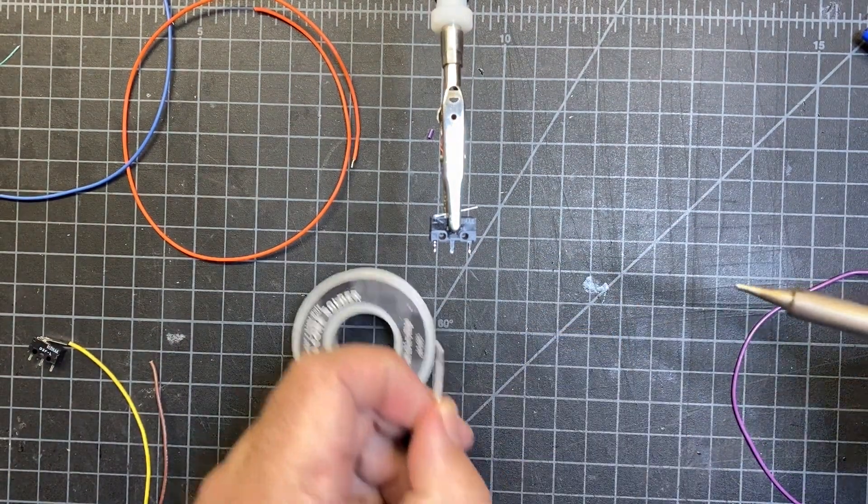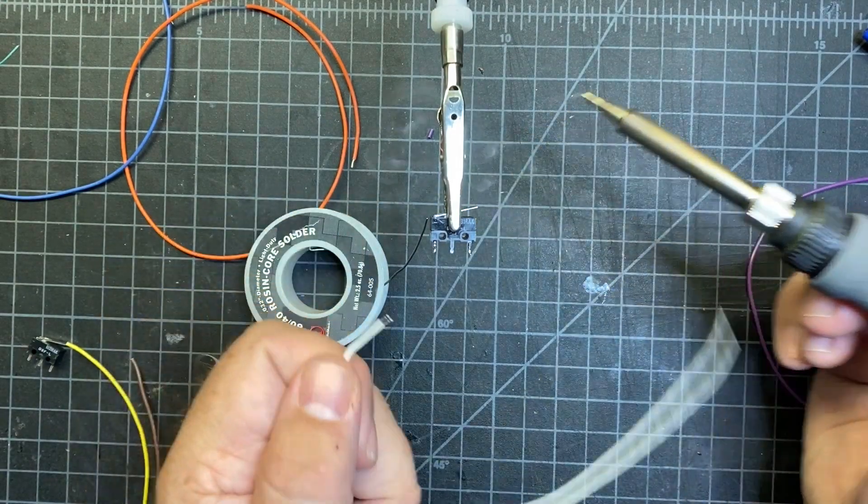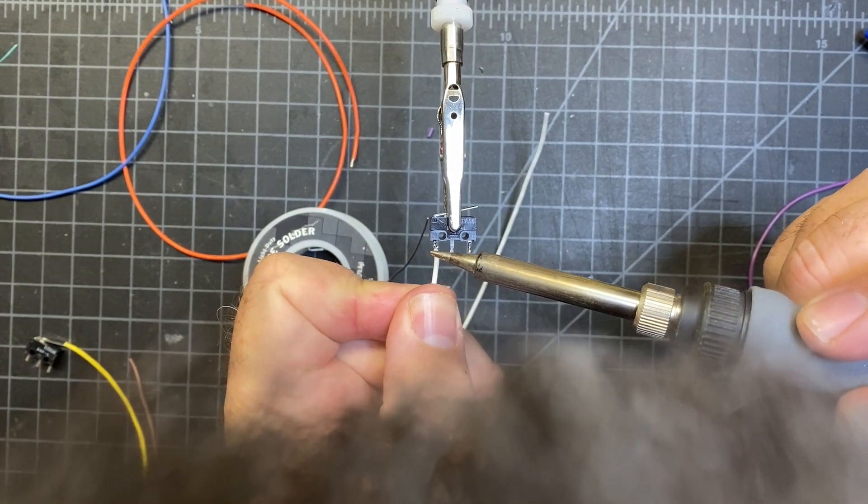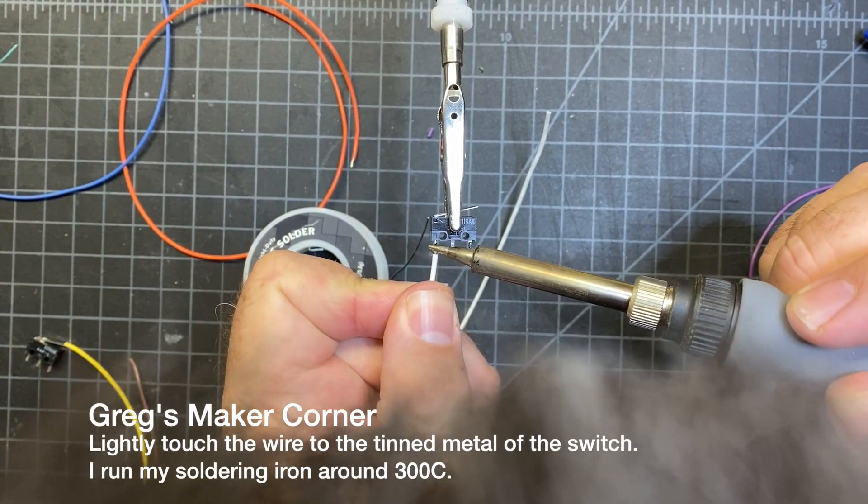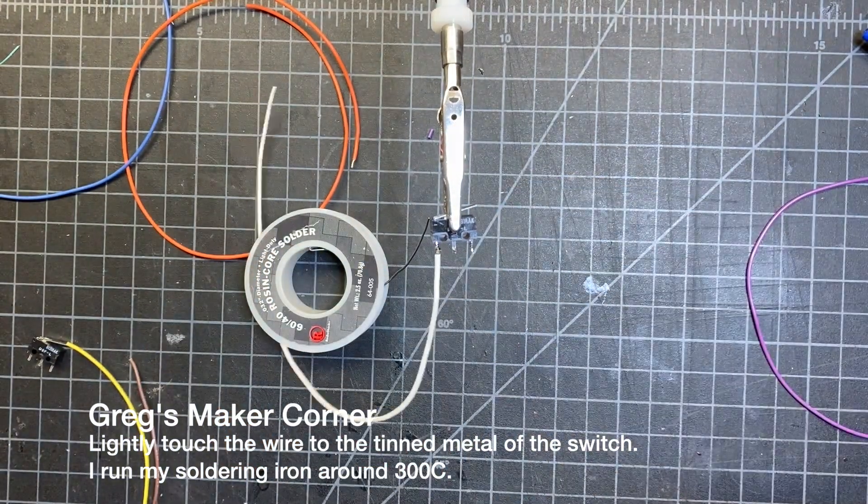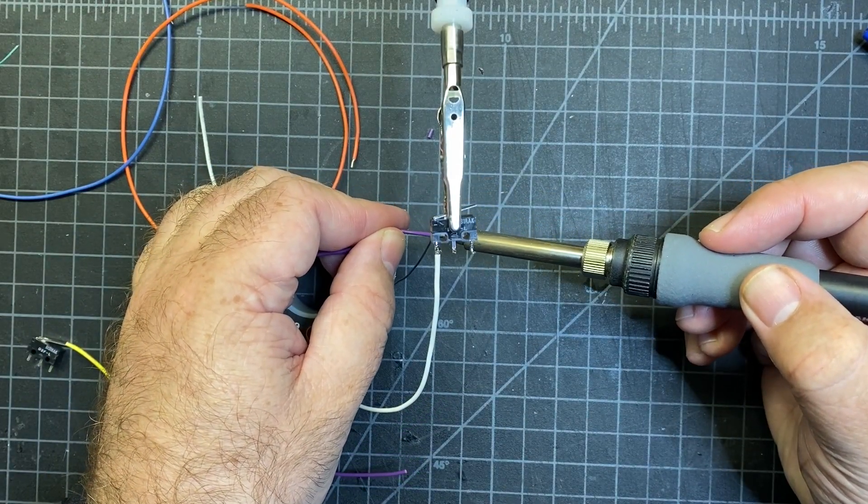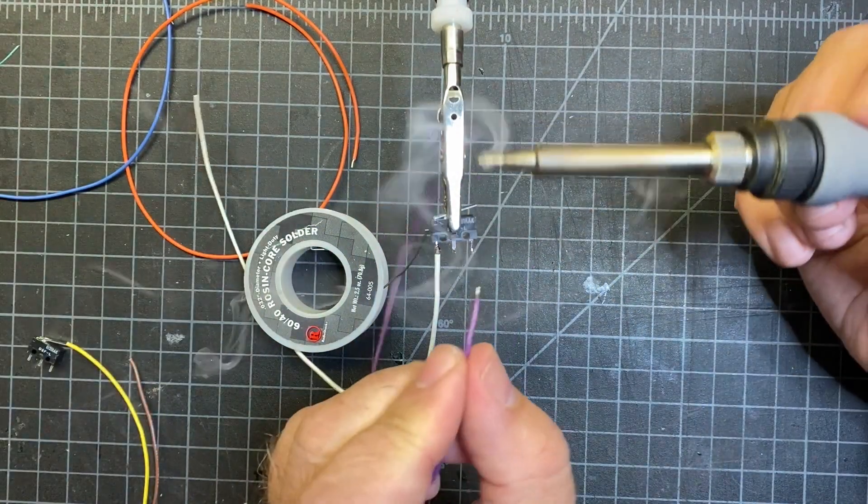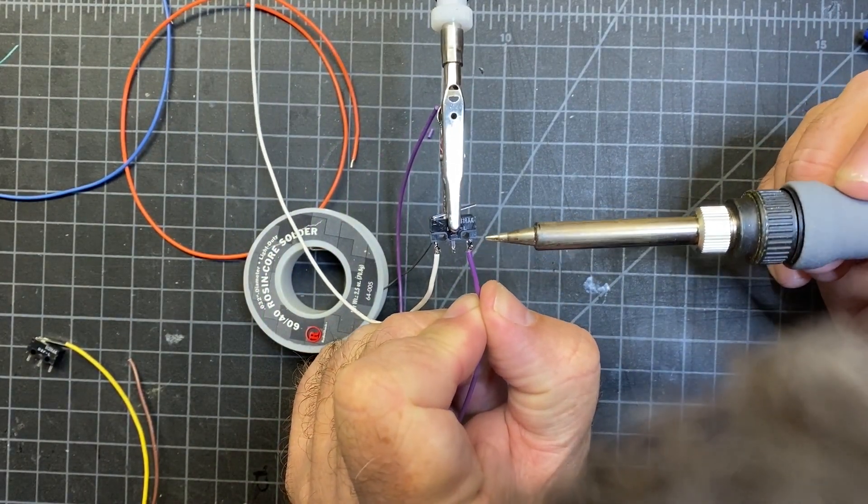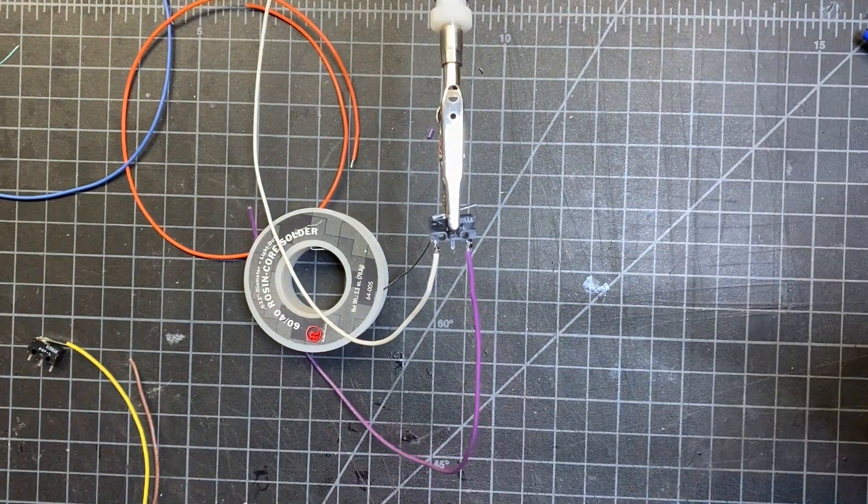And then I'm going to do the same thing on the wires. I'm just going to tin a little bit of solder on here. And then I will simply solder these to the tip that I just tinned. Here we go. Same procedure for the other wire. Those are pretty good.